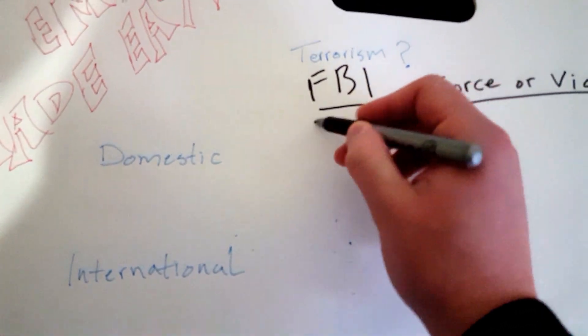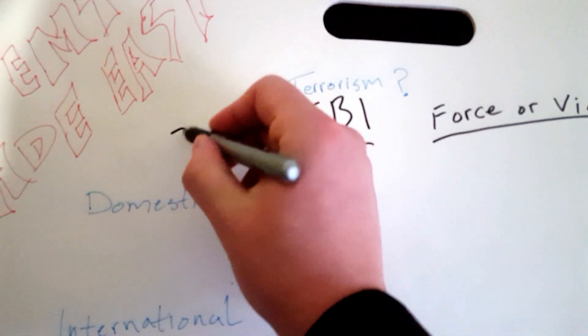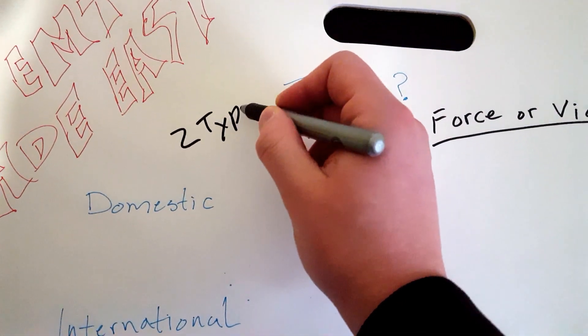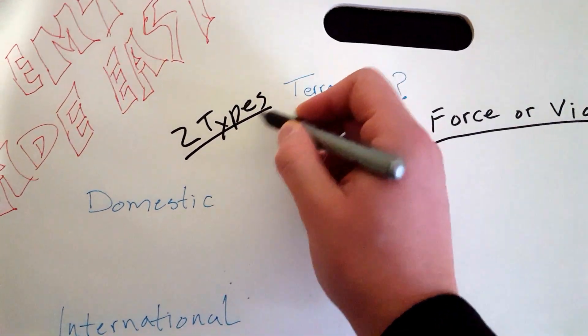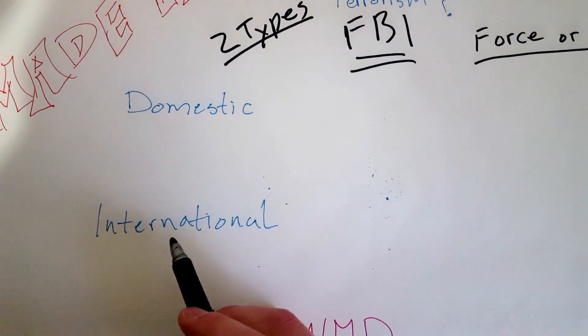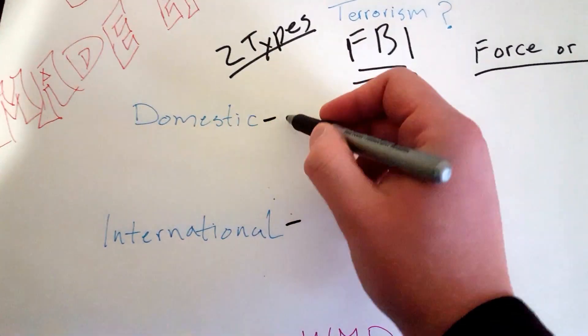Per their definition, there are two different types. There are two types of terrorists. You have what's called domestic terrorists, and then you have what's called international terrorism or terrorists.